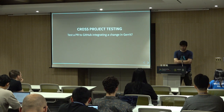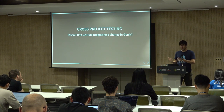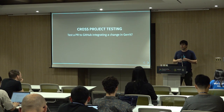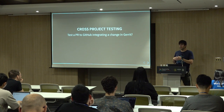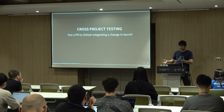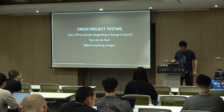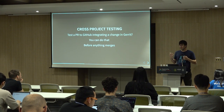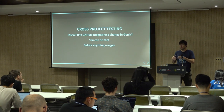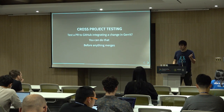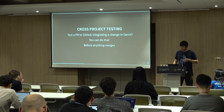For example, if you want to test a pull request to GitHub integrating a change in Gerrit, you can do that. In our case, because Zuul is developed in a Gerrit system and we're integrating with Ansible, we can combine those two together and test it before making a release. We can do that before anything merges, which is really powerful — we don't need to make a release just to test if a new feature works in the downstream project. We can release with confidence that it will actually function the first time.